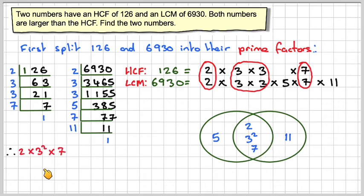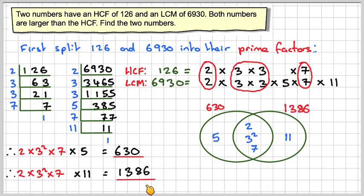So 2 × 3² × 7, which is the HCF, times 5 gives 630. And 2 × 3² × 7 times 11 gives 1386.